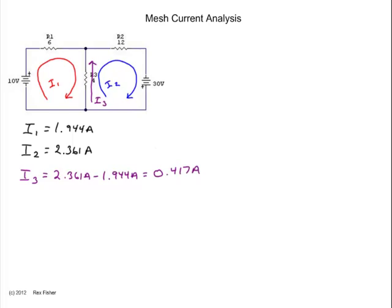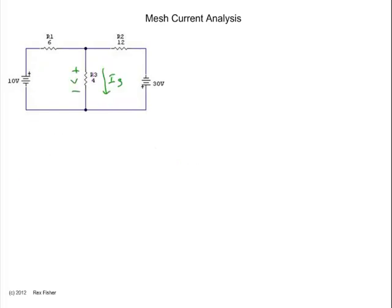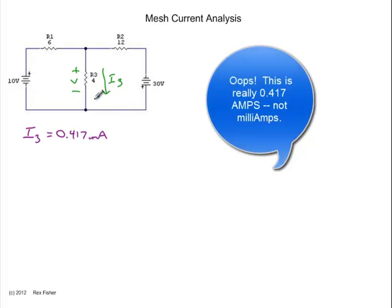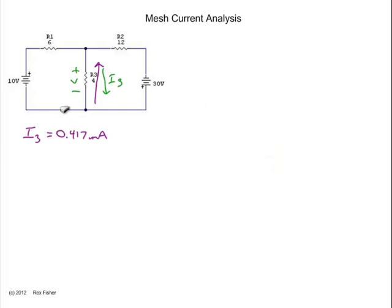Well, let's go back to our original question. We wanted to find I3 and V3 across R3. And we discovered that I3 is 0.417 milliamps. But that it actually flows in the opposite direction of what we thought. So let's get rid of the wrong direction. And that means the voltage polarity is backward as well. So let's get rid of that. And replace that with the correct polarity.